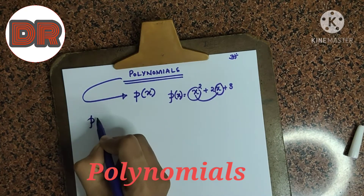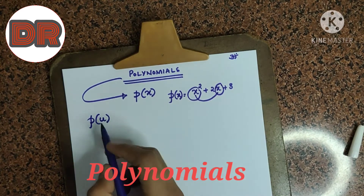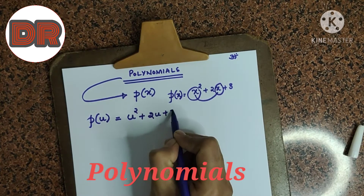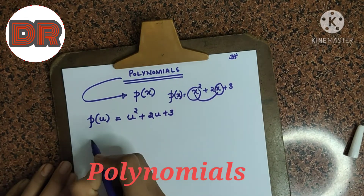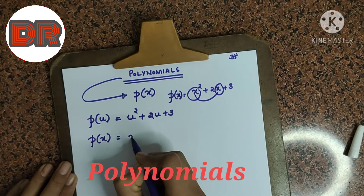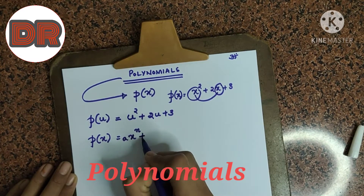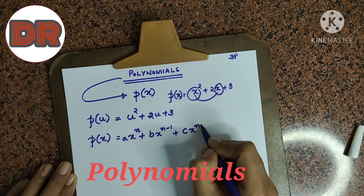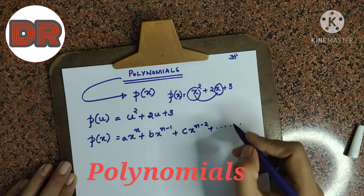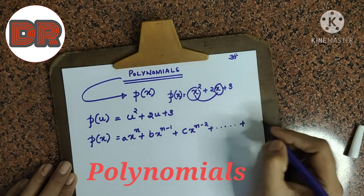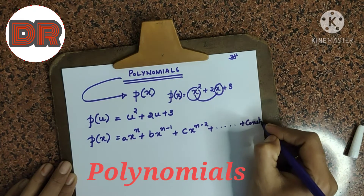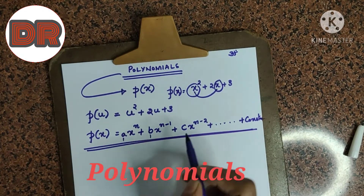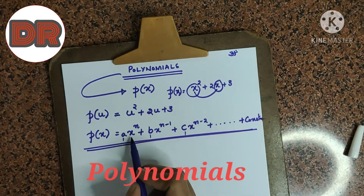Similarly, I can represent p of u for polynomial with variable u. The same thing I can represent as u square plus 2u plus 3. Now, in general, a polynomial can be represented as ax to the power n plus bx to the power n minus 1 plus cx to the power n minus 2 and so on, plus some constant term at the end. This is the general representation for polynomial.